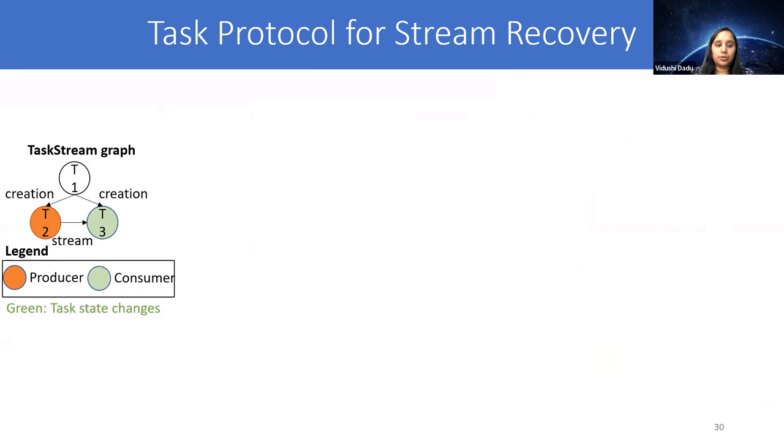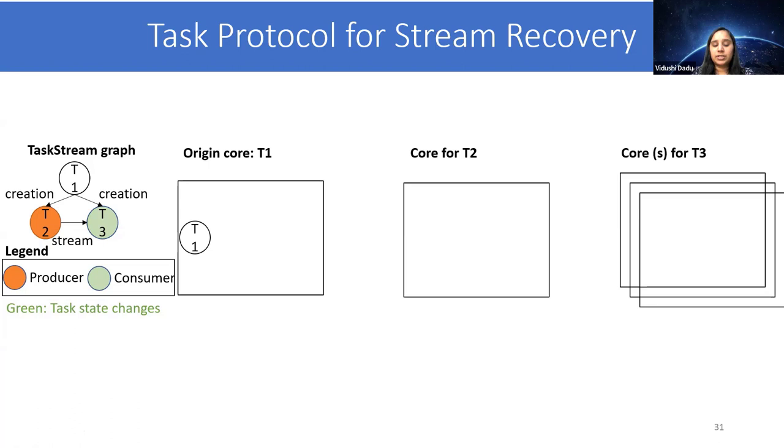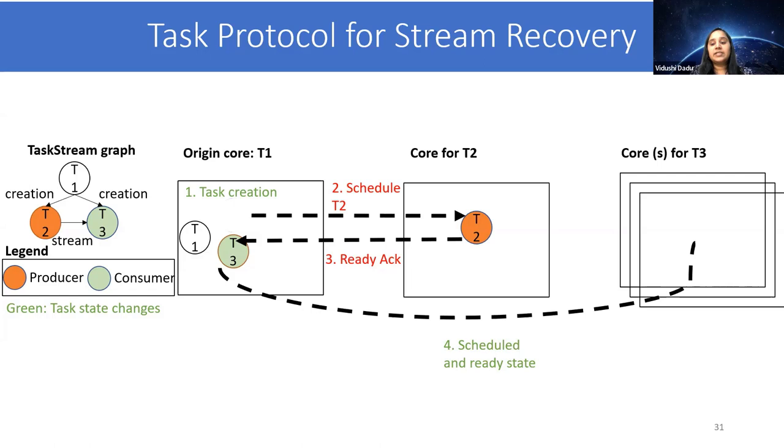To explain that, let's look at the task protocol. Here is the task stream graph where the T1 task creates tasks T2 and T3, which are then dependent on each other using a streaming edge. Let's consider three cores here: a core where the original task is present and where it will create T2 and T3, then cores where T2 might be scheduled or T3 might be scheduled. Note that there can be multiple instances of T3. As in the case of batching, you might be streaming to multiple dependent tasks. The first step would be to create T2 and T3, and then the parent task would be scheduled at its core. When its data is available, it will inform T3, which will then be scheduled to some core. When it gets hold of the resources at that core, it will be in the execution state. Then it will send the ready acknowledgement message to T2. After this, T2 can start streaming data in. When all the cores have received all the data, they will send the done signal and the streaming communication can be closed.